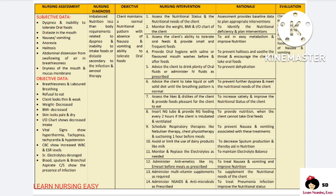Monitor and replace electrolytes if there is electrolyte imbalance. Antiemetics should be given if the patient is having nausea and vomiting. Multivitamin supplements are given in order to supplement the nutritional needs of the client. NSAIDs and antimicrobials are administered in order to treat pneumonia and also improve the nutritional status of the client. In evaluation, you have to see whether the client's nutritional status was improved.